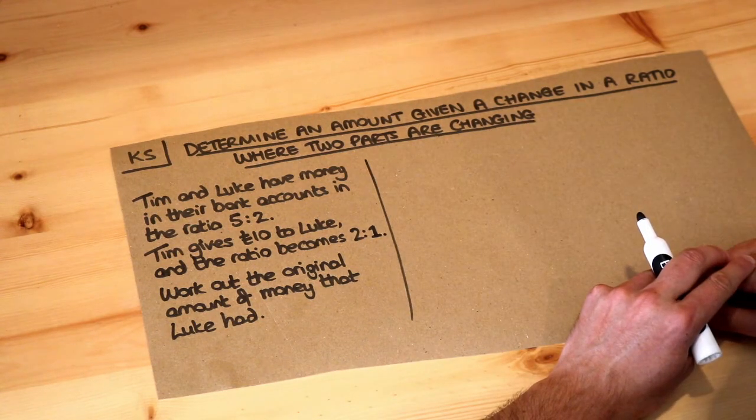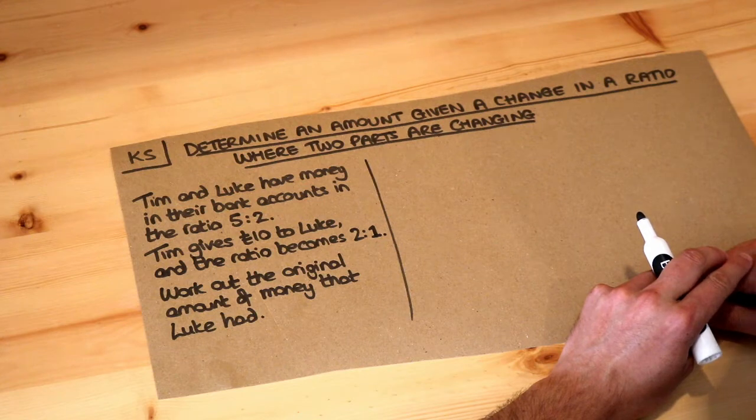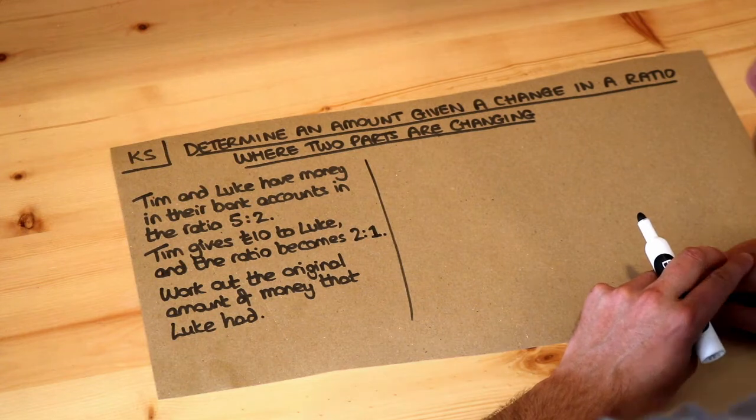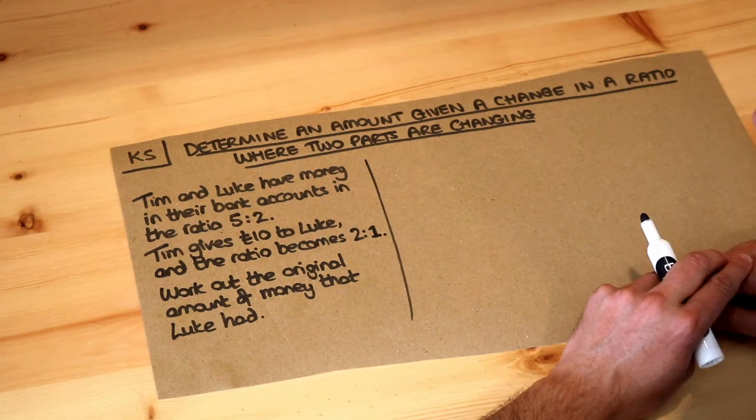Tim and Luke have money in their bank accounts in the ratio 5 to 2. Tim gives ten pounds to Luke and the ratio becomes 2 to 1. Work out the original amount that Luke had.